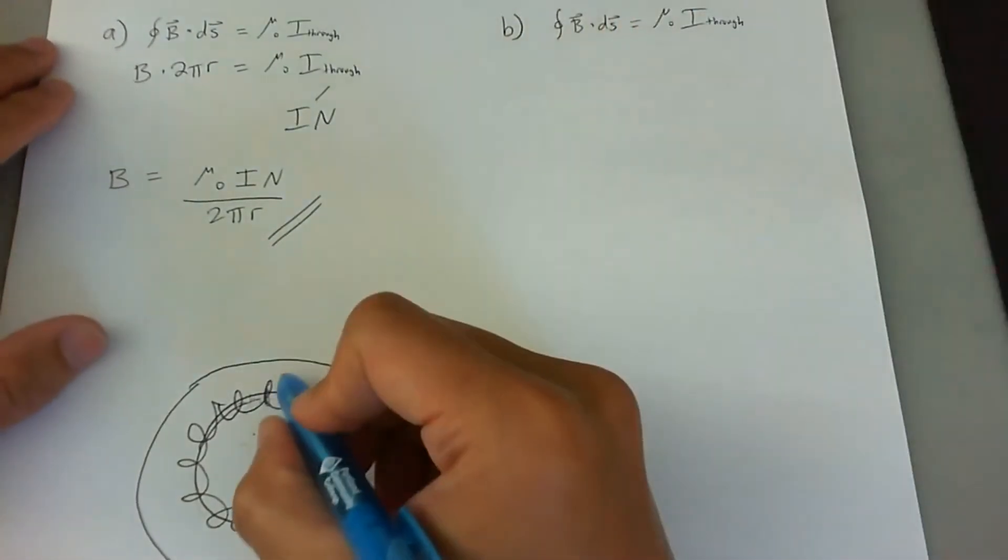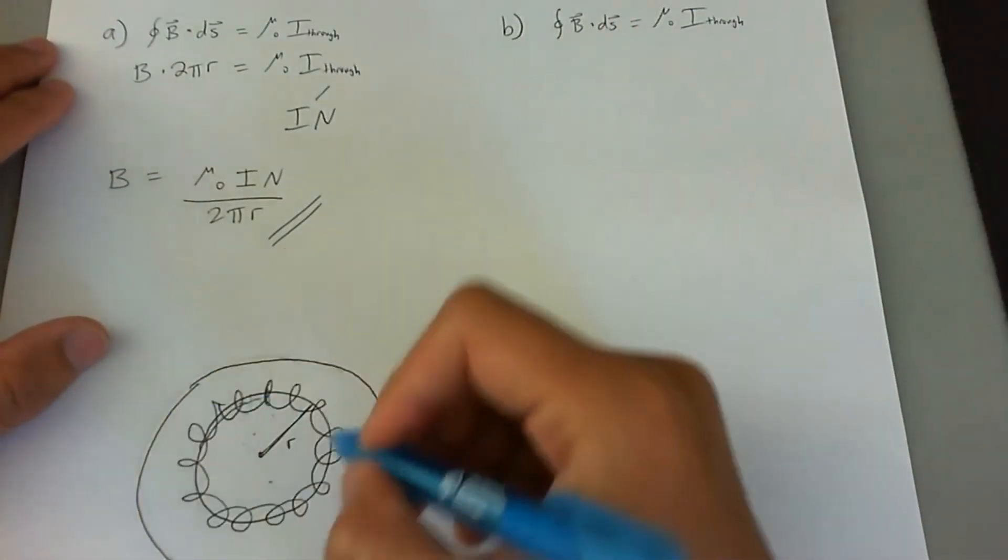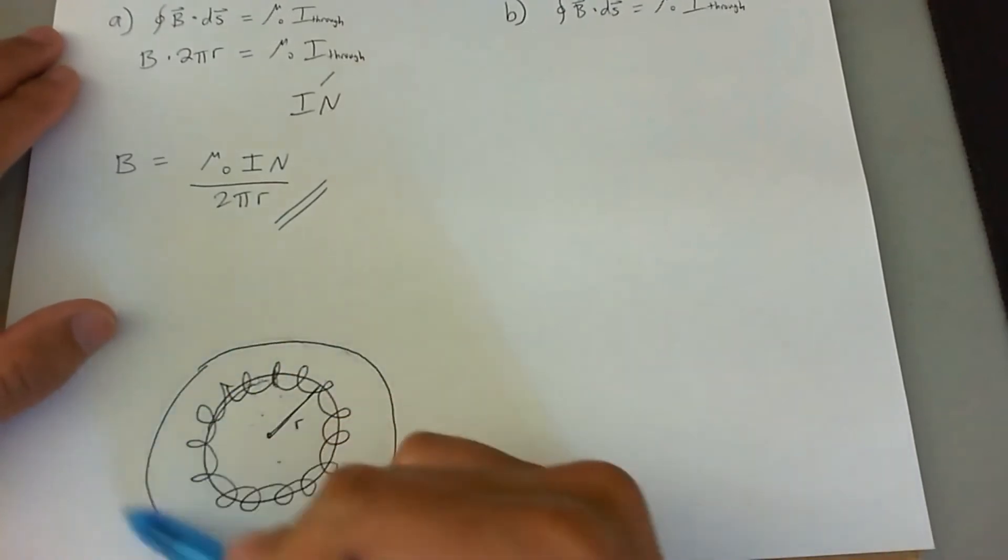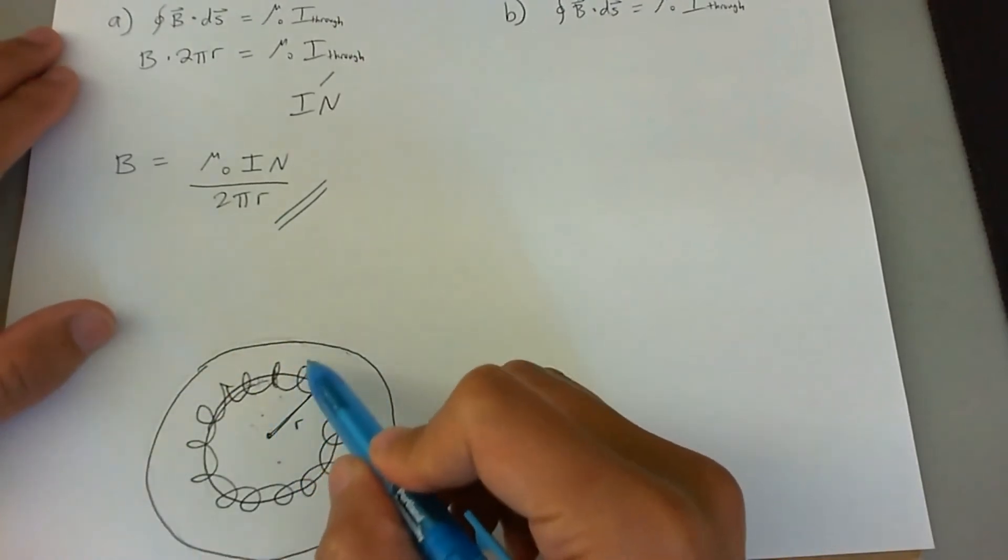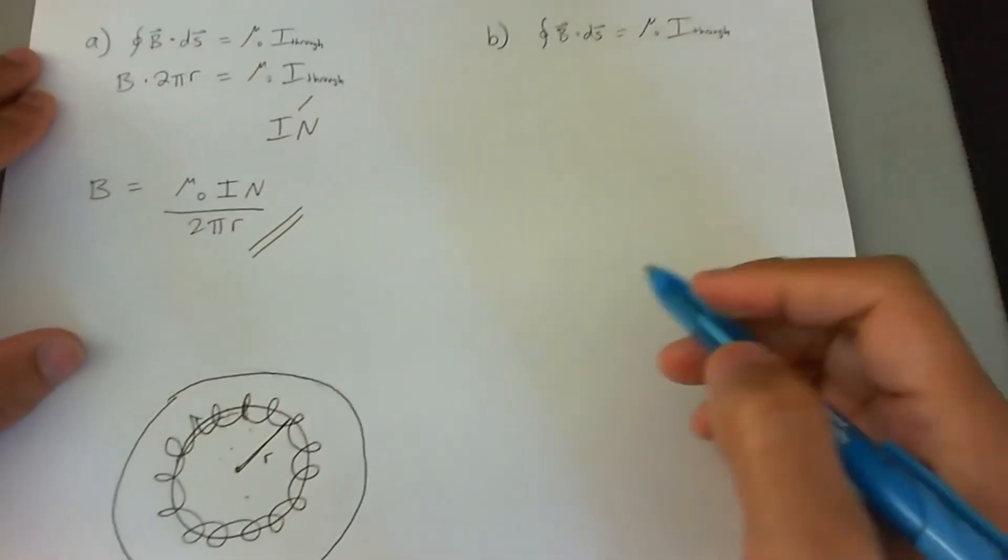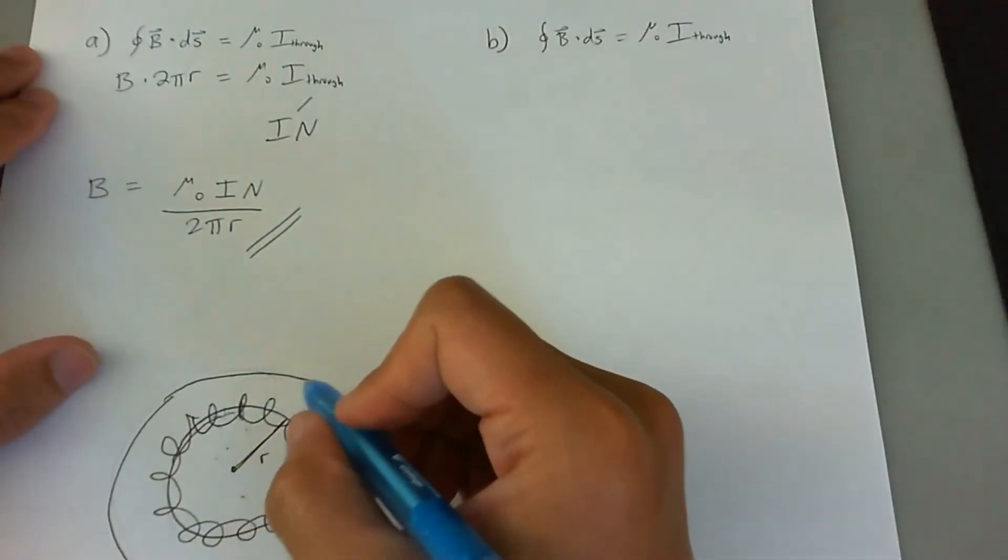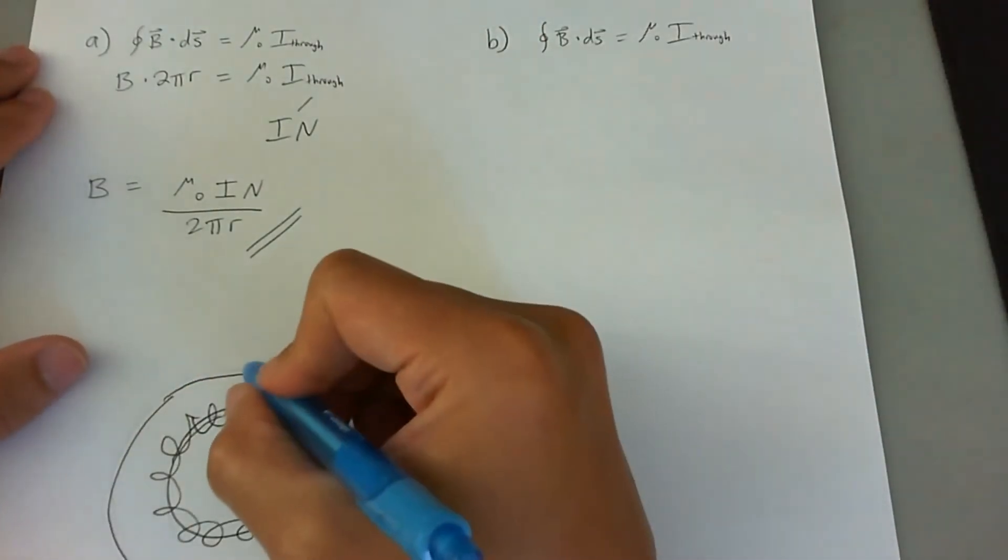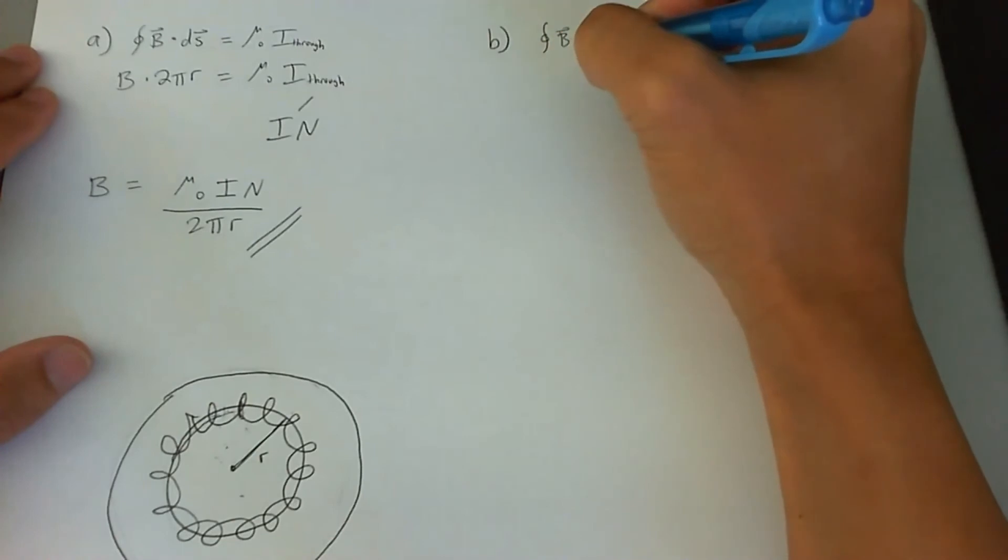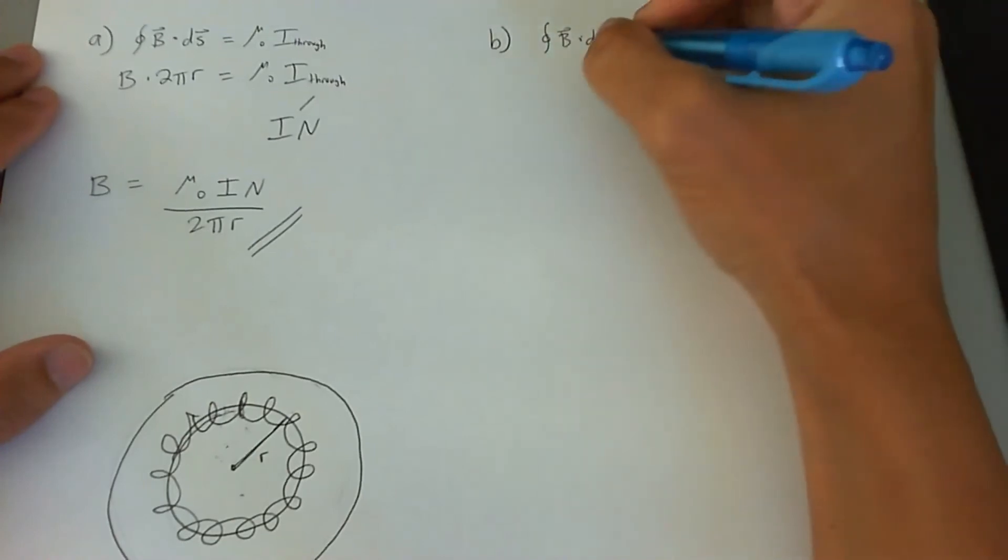Now, if you go outside the toroid, let's go ahead and do this one right here where you're outside the toroid in a larger radius than the toroid itself. So again, we're going to just do this amperian loop and we'll look at how the B field is parallel to that amperian loop.